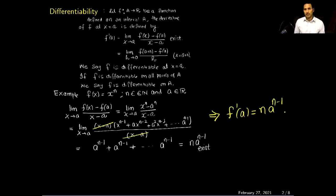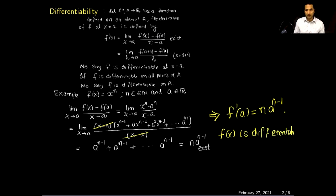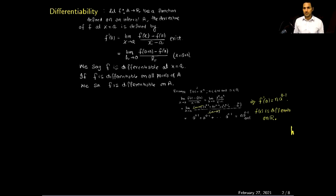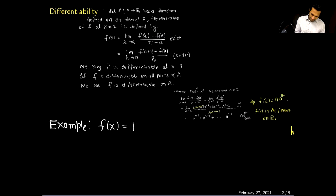Since a is an arbitrary real number, this implies that F(x) = x^n is differentiable at every real number, or in other words, this function is differentiable on ℝ. Now let me give you one more example of a function which is not differentiable.